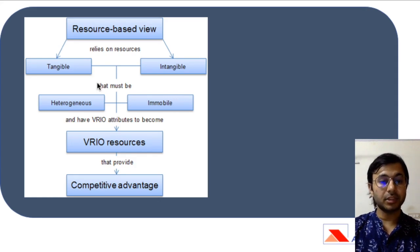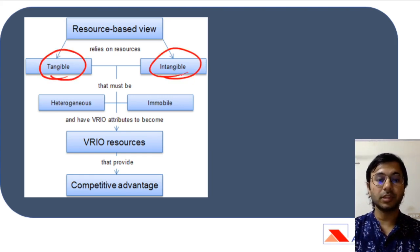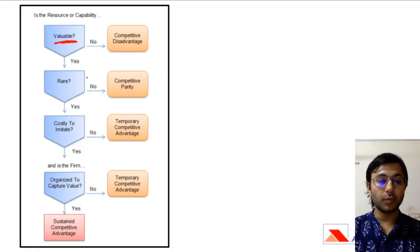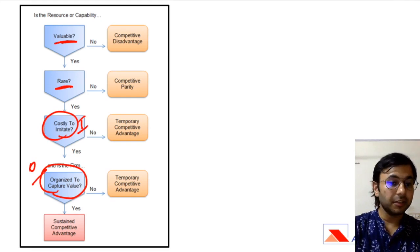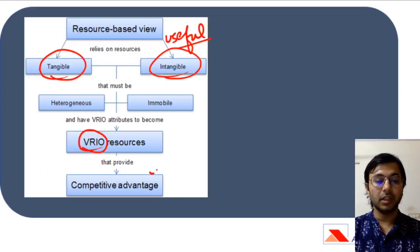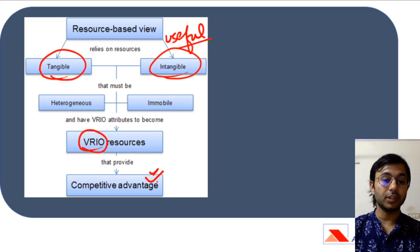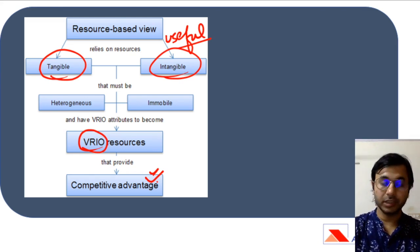The first is resource-based view or resource-based theory, which says that an organization has two kinds of resources: tangible and intangible. If these resources are valuable, rare, costly to imitate, and organized to capture value — that is, VRIO — then the organization has competitive advantage. However, nowhere in the case has it talked about resources that the organization is reusing, whether these resources are differentiable, valuable, rare, or costly to imitate. Therefore, this is not our answer.